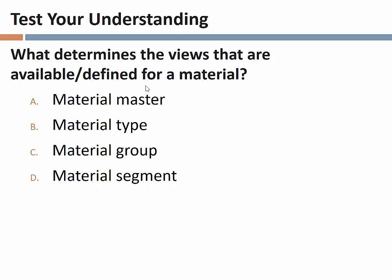I have one question for you that I actually just gave you the answer to: what determines the views that are available and defined for a material — material master, material type, material group, or material segment? Material type is the answer. Material master is the master record itself, material group is just arbitrary groupings for planning activities, material segment is a bogus term, and material type is the correct answer.